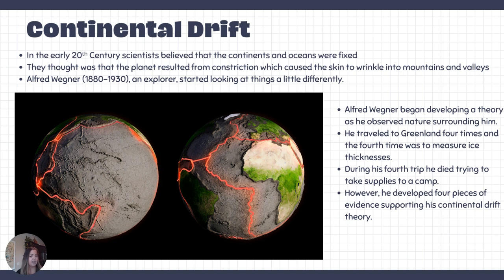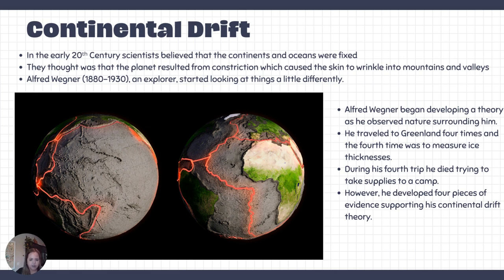For a very long time, most people assumed that the continents and the oceans were fixed and nothing was moving, because there was no reason to believe that anything was moving. Science was just getting off the ground in terms of studying the Earth and its properties. It wasn't until the late 1800s that Alfred Wegener started doing expeditions to places like Greenland and Iceland, making observations about the world — notably that he saw a lot of the same fossils in different areas. He started to develop what we now know as the theory of continental drift.